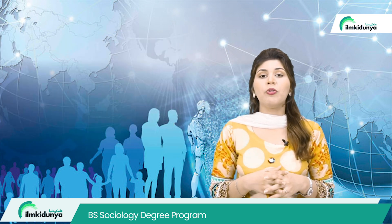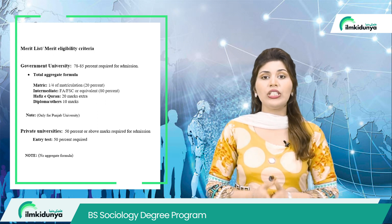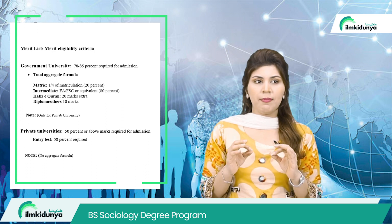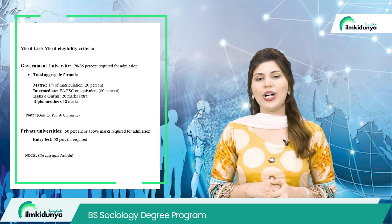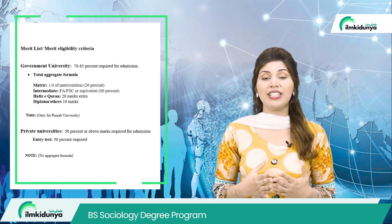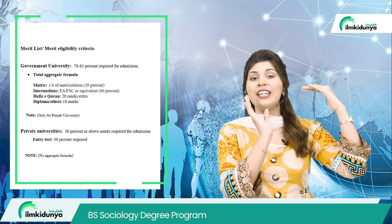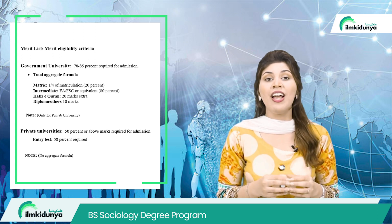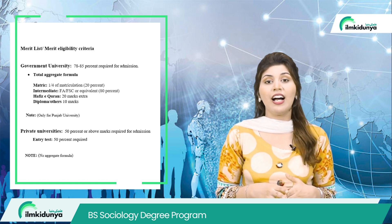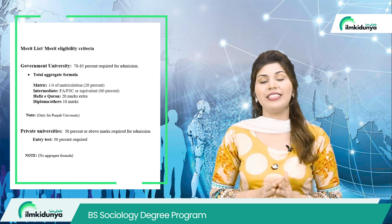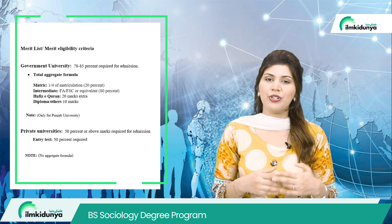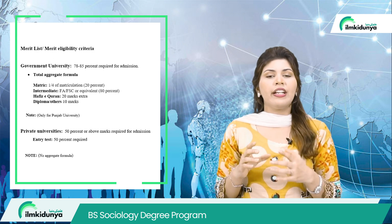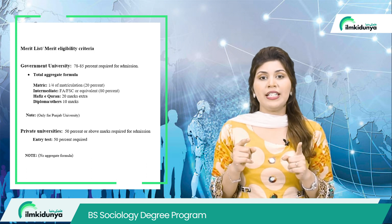Merit criteria is a very important thing every student needs to know. For public universities, you need higher merit — in previous years merit closed at around 85% and started from 90%. The aggregate formula is: Matric 20% marks plus Intermediate 80% marks. Additionally, if you have memorized half of the Quran you can get 20 bonus marks.